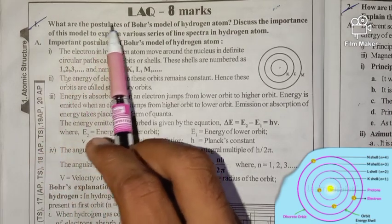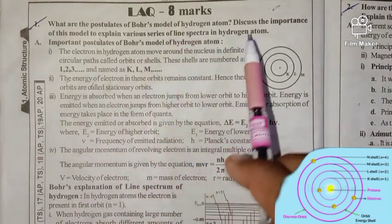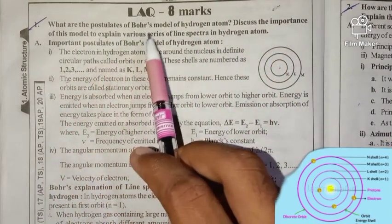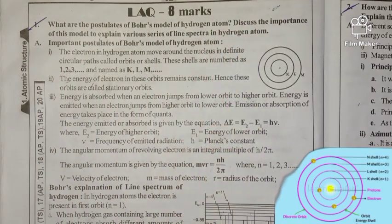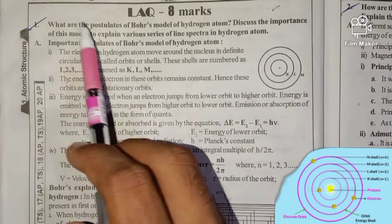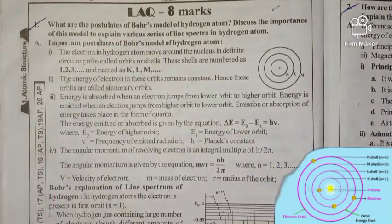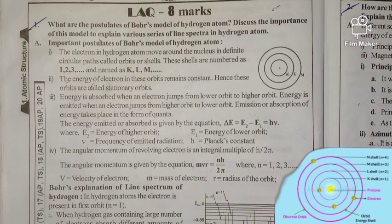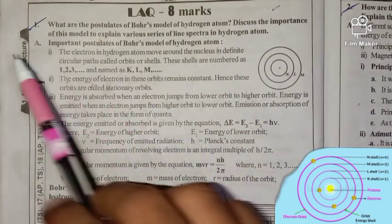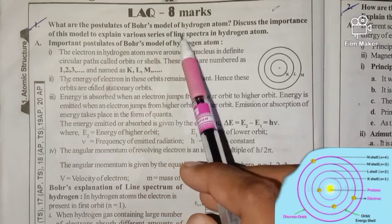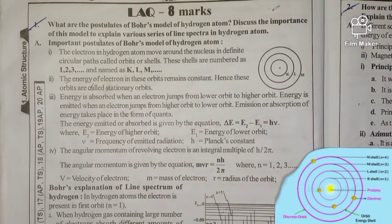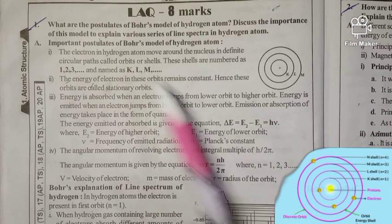The question is: what are the postulates of Bohr's model of the hydrogen atom? Discuss the importance of this model to explain various series of line spectrum in the hydrogen atom.